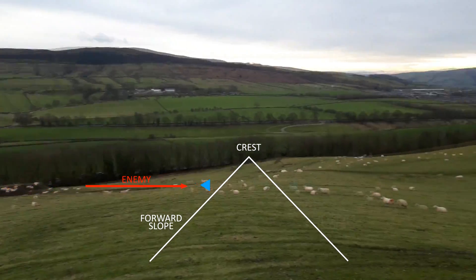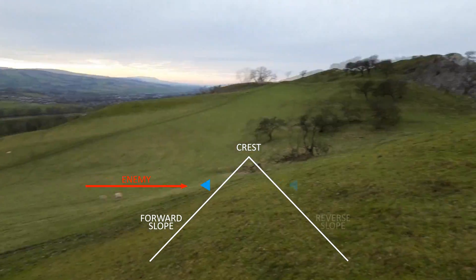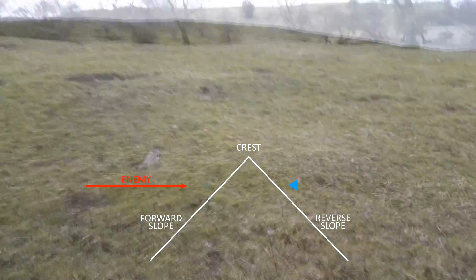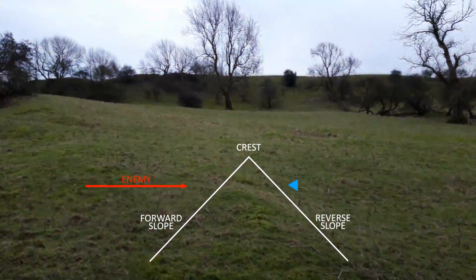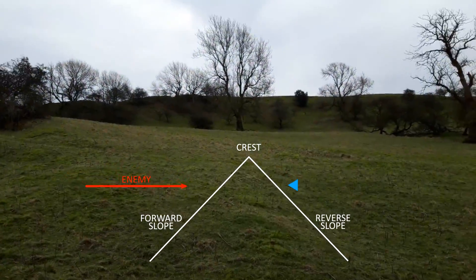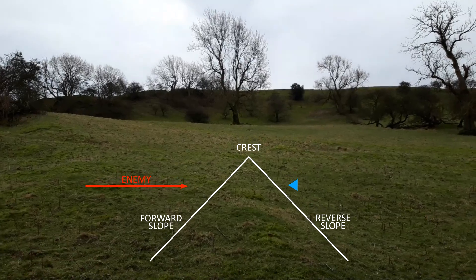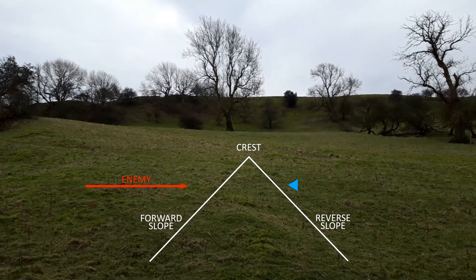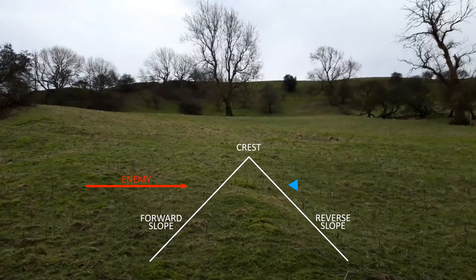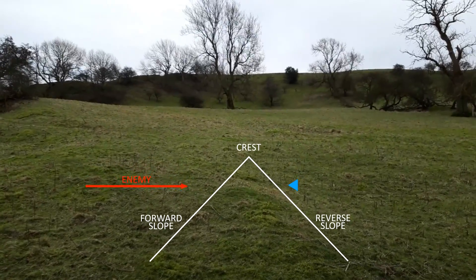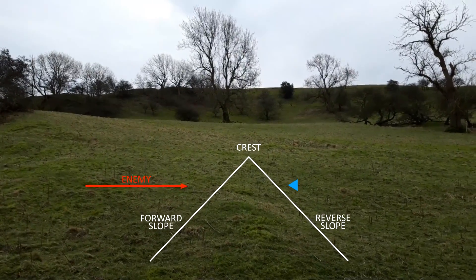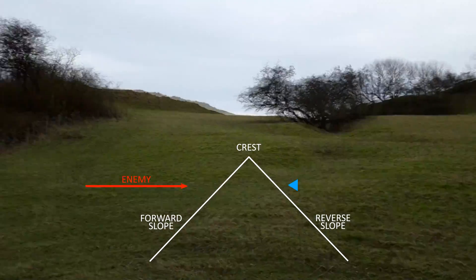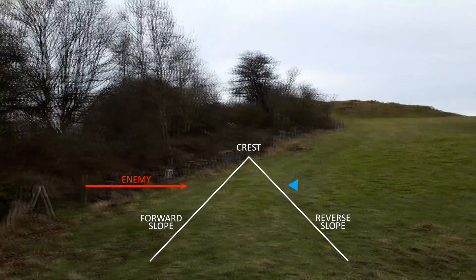A reverse slope is the opposite. If I turn around and go up and over the crest before turning to face the enemy again, I'm now on the reverse slope — on the slope of the ridge that faces away from the enemy, and the crest is in front of me. Obviously, from here I can't see as much; I can see the slope up to the crest and that's it.